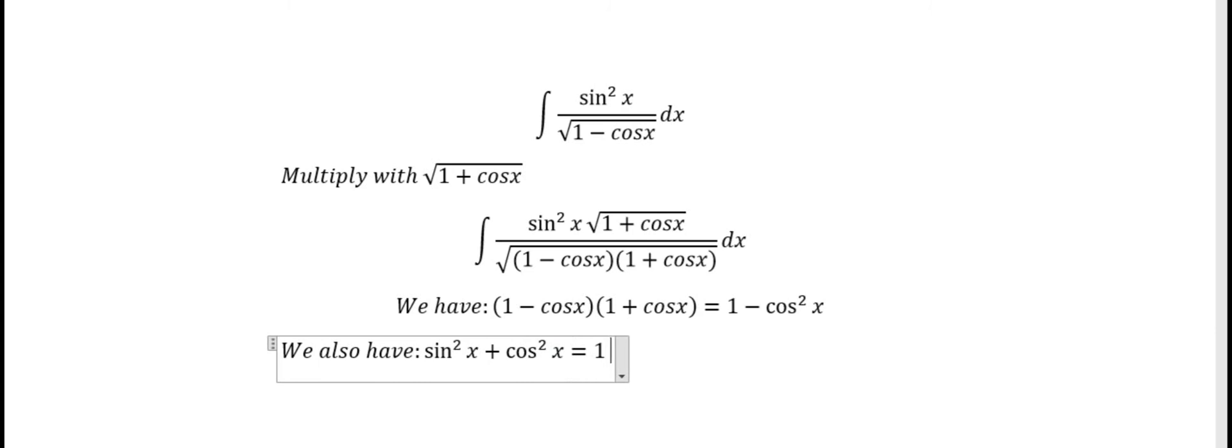We have 1 minus cosine s multiplied with 1 plus cosine s. We get 1 minus cosine squared s. So we have another formula and we change this one to sine squared s.